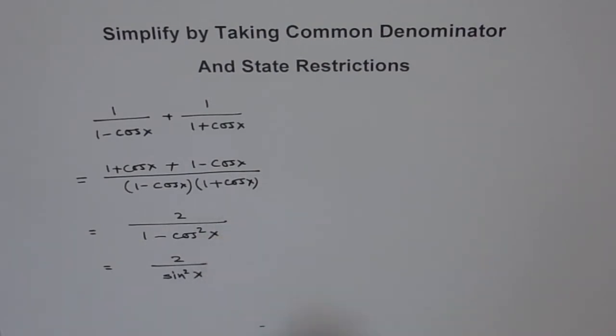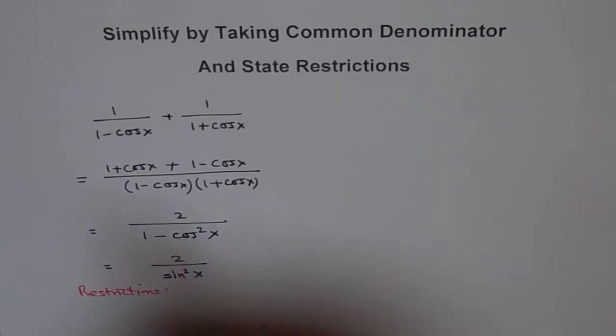So here, after all, what are the restrictions? Because the denominator can never be 0. So we should write restriction. So the restrictions are that first thing, cos x cannot be plus minus 1. So we say cos x is not equal to plus minus 1.